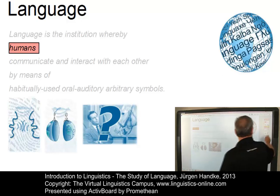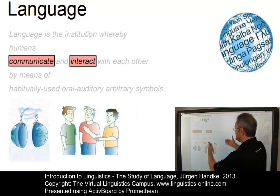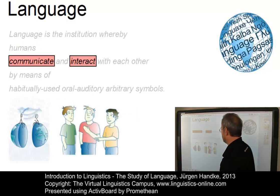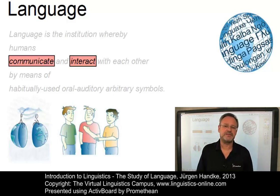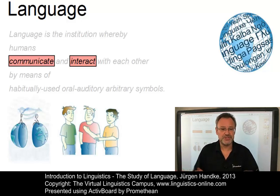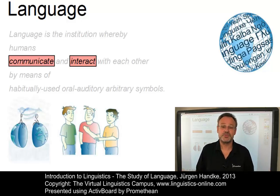The next keywords: communication and interaction. Certainly animals communicate and interact. Yet the communication systems humans use are certainly more complex than those of animals.